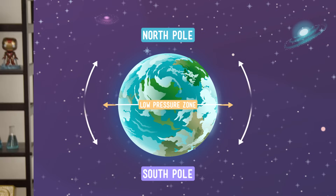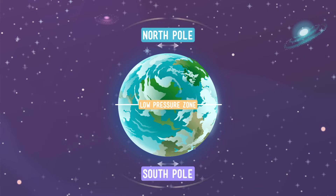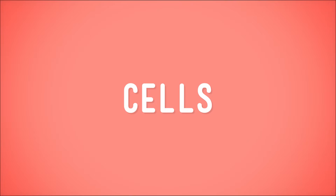Now, if the Earth weren't spinning on an axis, and if it didn't tilt, and if it wasn't covered in water, then the warm air at the equator would just rise toward the poles and the cool air would move in at the equator where the warm air just left. This would create two giant air currents called cells. But of course, things on Earth are much more interesting.